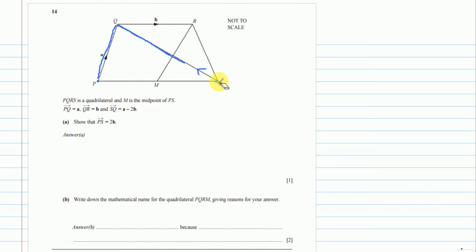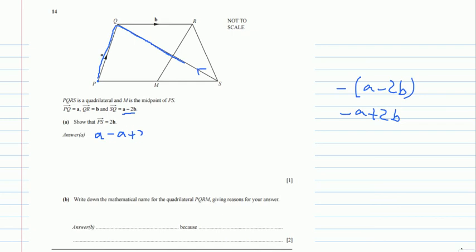So to go from P to Q is A, simply that is A. And then from Q to S it will be the negative of S to Q. So the negative of this will be minus A plus 2B. So here it will be minus A plus 2B.